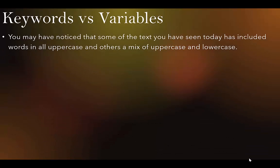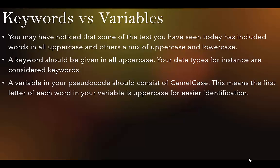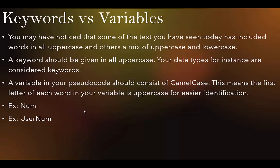Keywords versus variables. Some text you've seen today has been in all uppercase and other in a mix of uppercase and lowercase. A keyword should be given in all uppercase — your data types, for instance, are considered keywords. A variable in your pseudocode should use what we call camel case, meaning the first letter of each word in your variable is uppercase for easier identification. For example: 'Num' is a variable, 'UserNum' uses camel case with a capital U and capital N, or 'CompPicksNum' for 'computer is picking a number.'